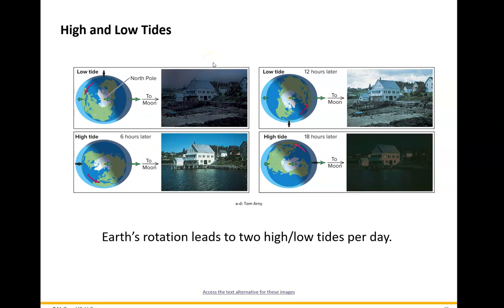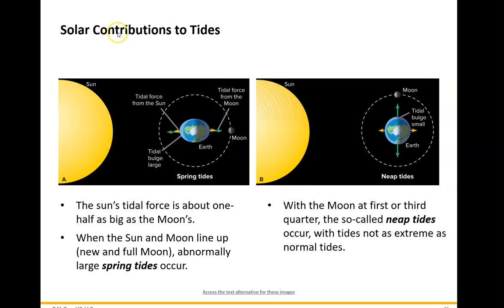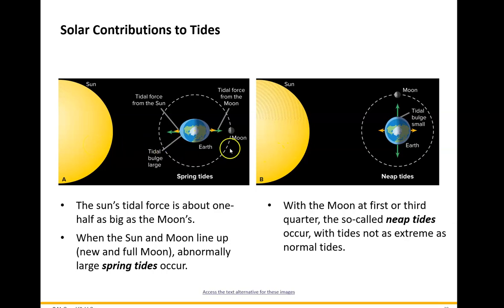It's not exactly a 24-hour period because the moon has moved by about 50 minutes. Besides the moon, which is the main contributor to the tides, the sun actually contributes to the tides. When the Earth and the sun and the moon are lined up — that's either during a full moon or during a new moon.